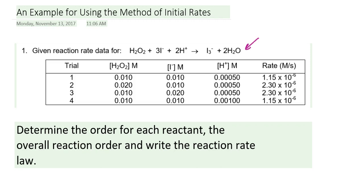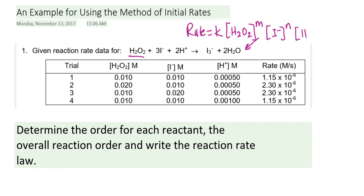For this reaction, our rate law should look something like: the rate is equal to some constant K — the rate constant — multiplied by the molar concentration of hydrogen peroxide, since that's the first reactant in the reaction equation, raised to some power m, times the concentration of the iodide raised to some power n, and the concentration of the hydrogen ion raised to some power p. For an overall rate law, we cannot assume that these exponents correspond to the stoichiometric coefficients in the chemical reaction equation.